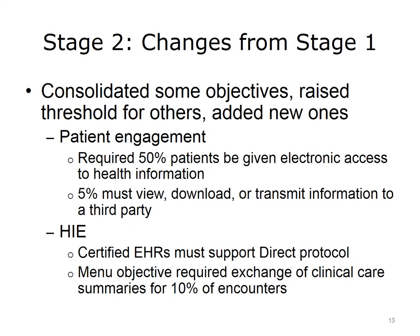Moving on to Stage 2, there were changes from Stage 1. Some objectives were consolidated, some objective thresholds were raised, and seven objectives were added around patient engagement and health information exchange. One of the new core objectives required that 50% of patients or their authorized representative be given access to health information, and of those, 5% had to view, download, or transmit health information to a third party. For health information exchange, the certification process now required supporting the direct protocol of point-to-point secure transmission of information, and a new menu objective required the exchange of clinical care summaries for 10% of all patient encounters.